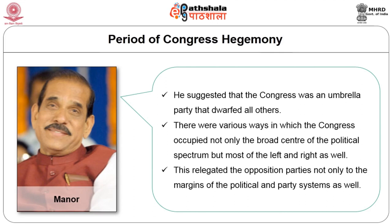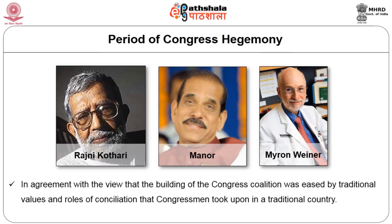James Manor argued that Congress was an umbrella party dominating all other non-Congress parties. Congress occupied not only the broad center of the political spectrum but most of the left and right as well, relegating opposition parties to the margins. This dominance — thanks to its efficient party organization, all-encompassing ideology, and social coalitional support base — figures repeatedly in the writings of James Manor, Paul Brass, Rajni Kothari, Maurice Jones, and many other analysts of the Indian party system.